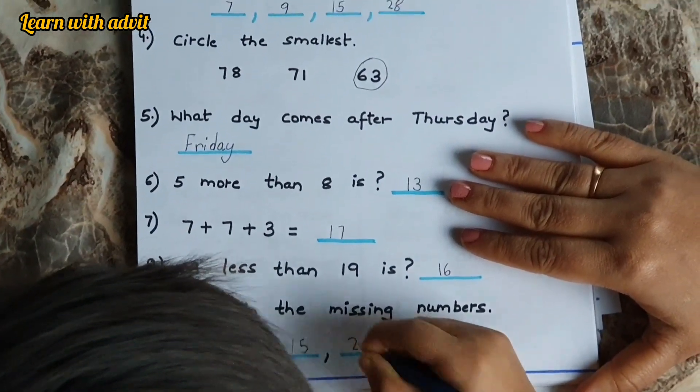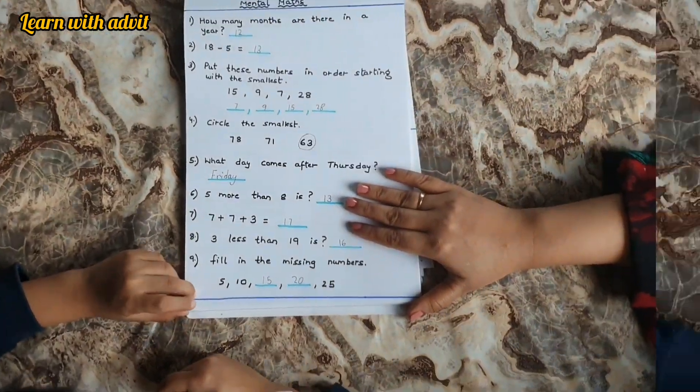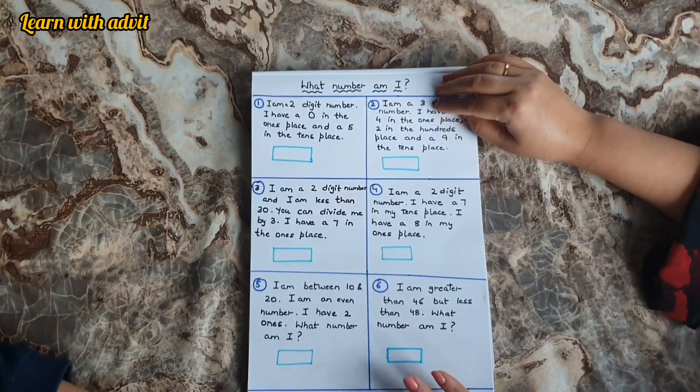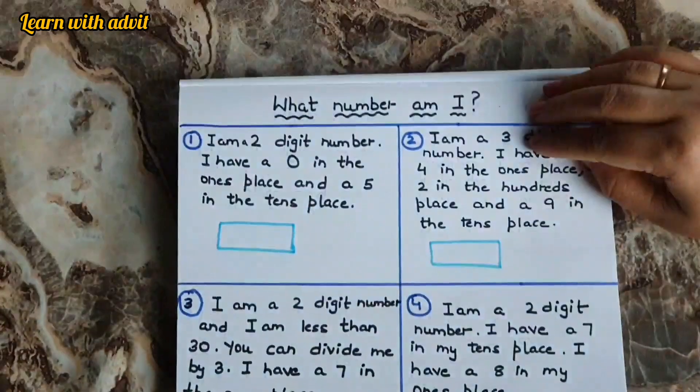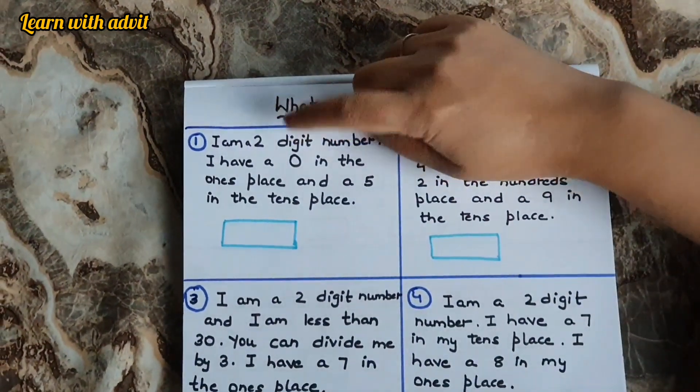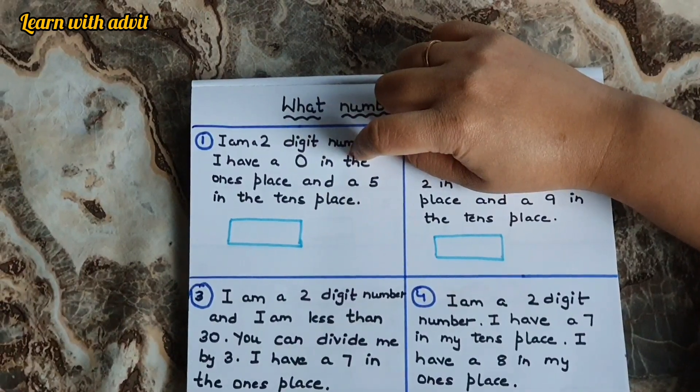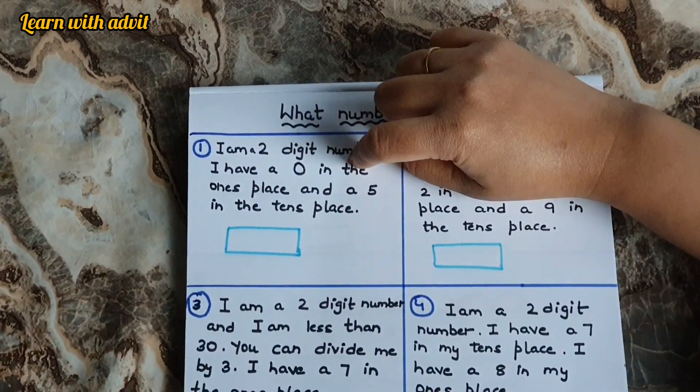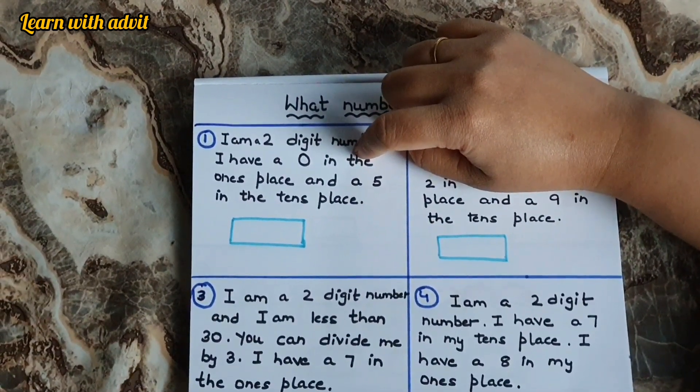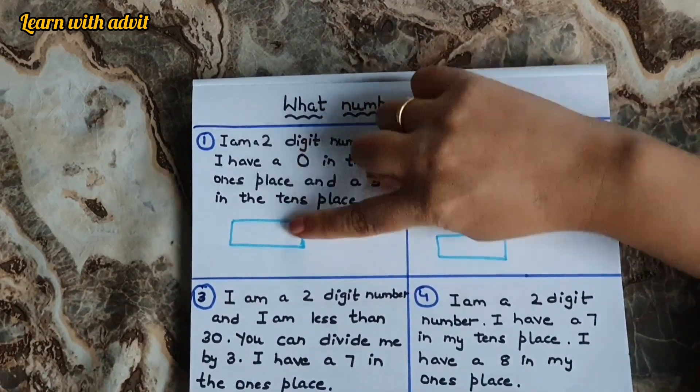So this is the interesting sheet - what number am I with a clue. I am a two digit number. I have a zero in the ones place and a five in the tens place. The number is fifty. Good job, write it down.